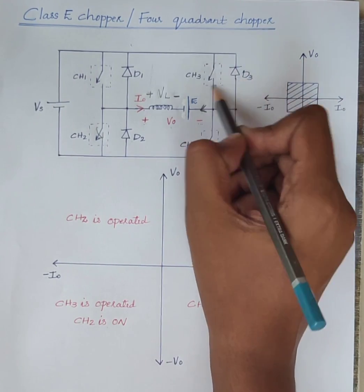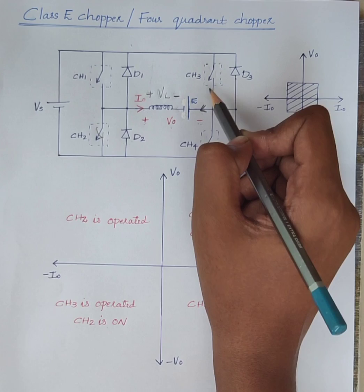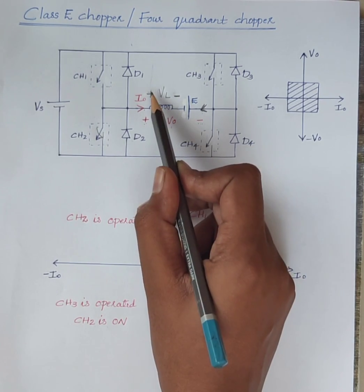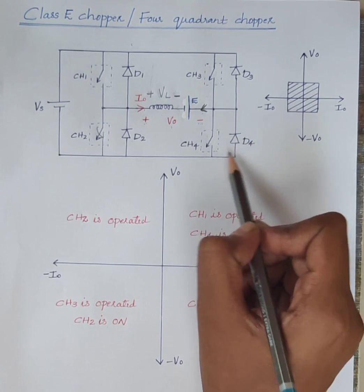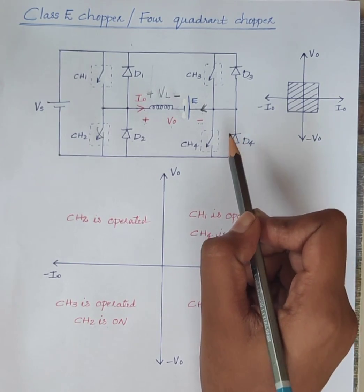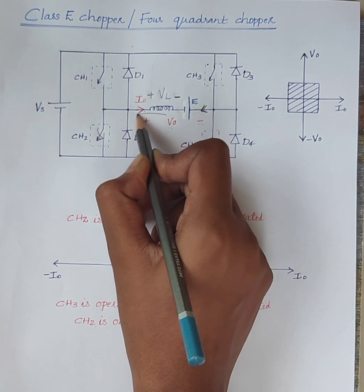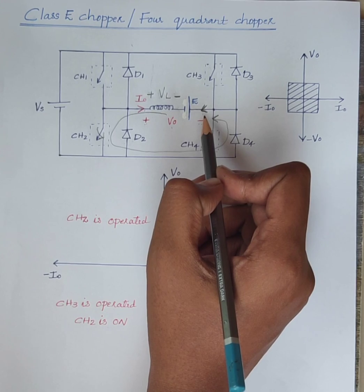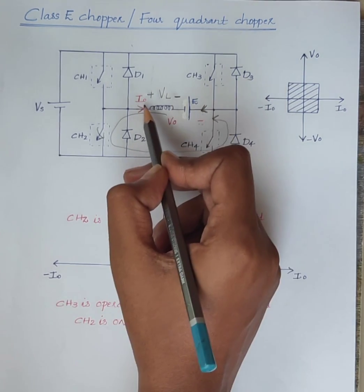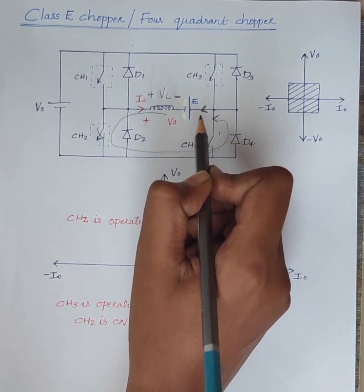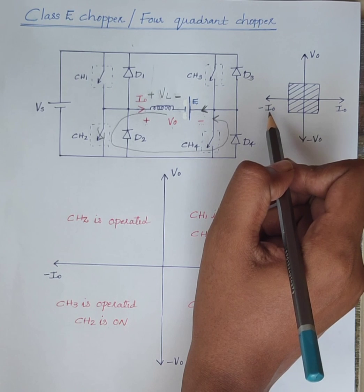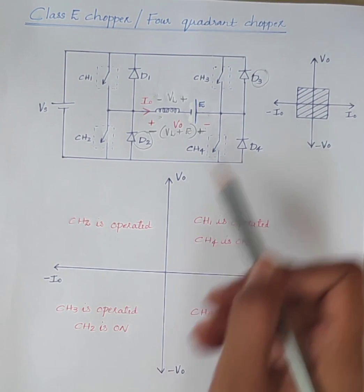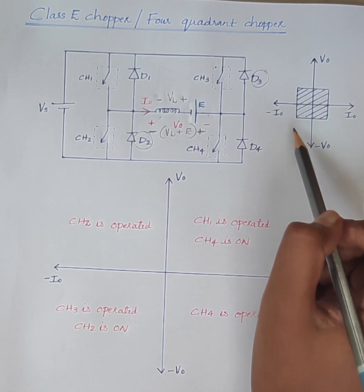Consider the second case when CH3 is off. Due to the induced voltage in the inductor — positive here, negative here — diode D4 becomes forward biased. The current freewheels through CH2 and D4. The load current I0 flows in the direction opposite to the direction shown. Therefore the output current I0 is negative. When CH3 is operated, both output voltage and output current are negative — third quadrant operation.